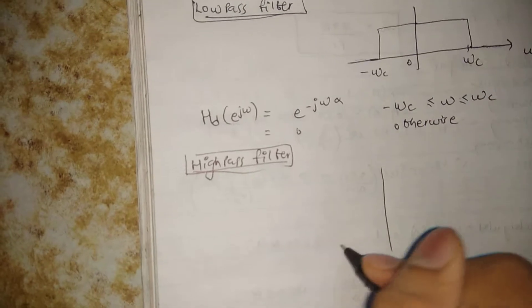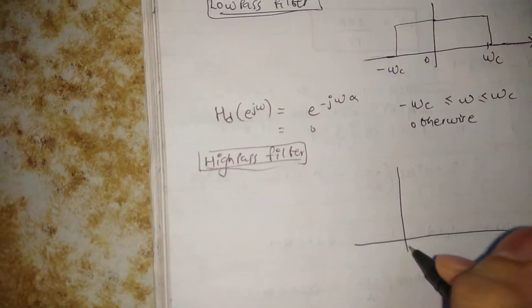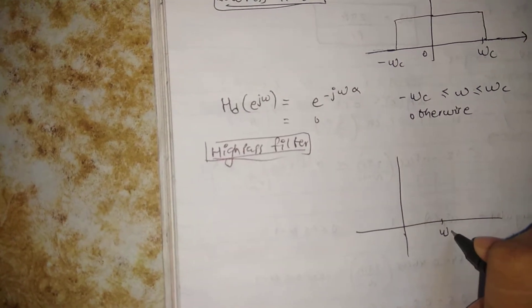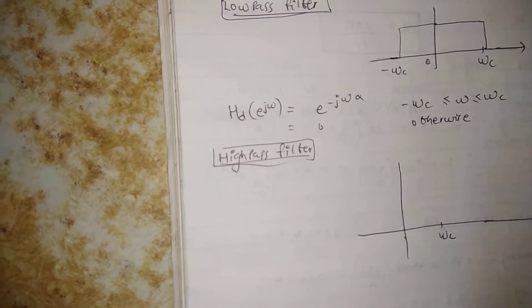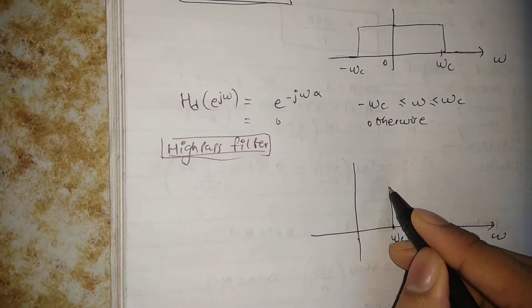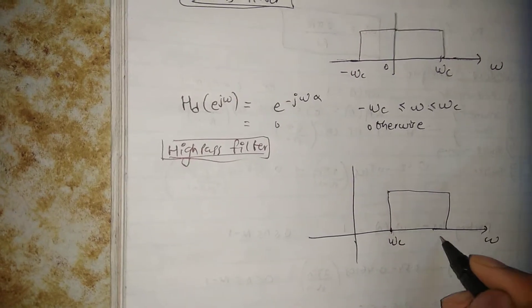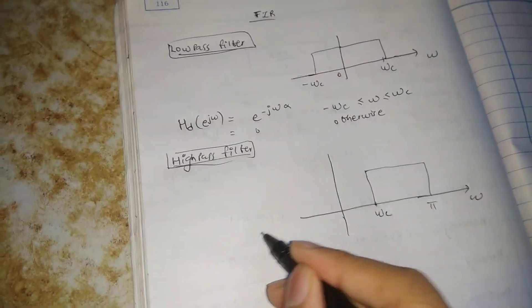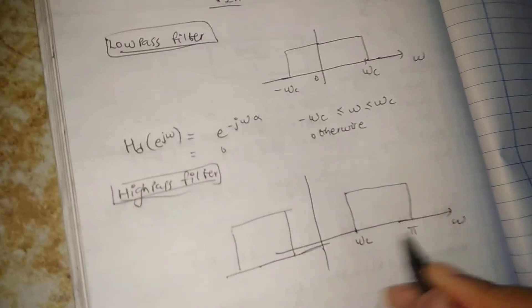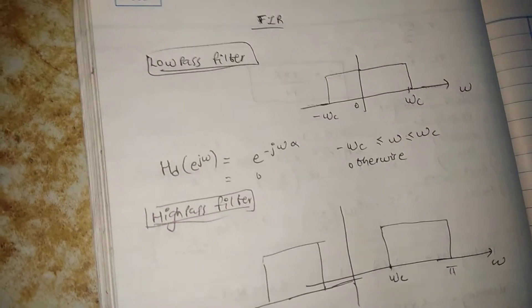In high pass filter design, draw a graph. In high pass, you will have your omega C on the axis. The high pass filter will start from omega C and go up till pi. Draw the same mirror image on the other side — this is pi and this corner will be minus pi.